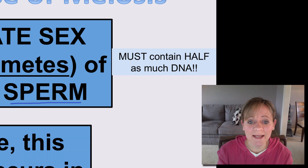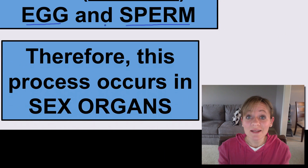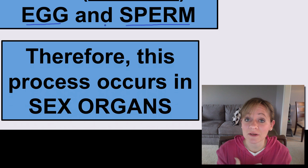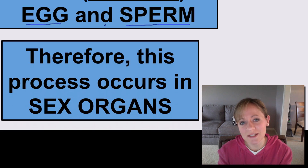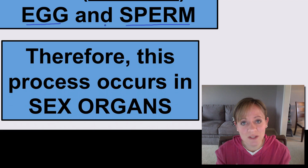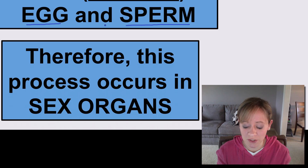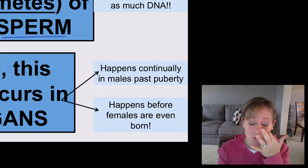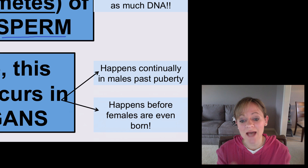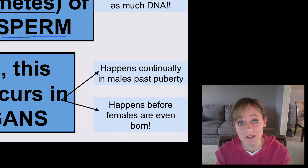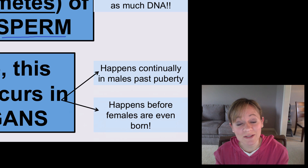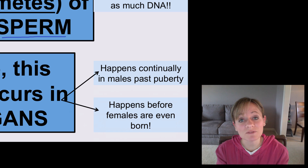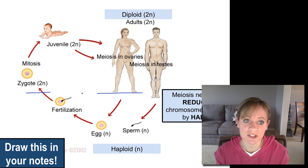We're creating egg and sperm, so where is this happening? It's happening in the sex organs — in the ovaries and in the testes. This is the only place in the human body where meiosis is occurring, in these sex organs, to create egg and sperm. As a little side note, this process is happening continually in males once they pass puberty, but in females it's actually already happened at least part of the way once females are born, which is very interesting.